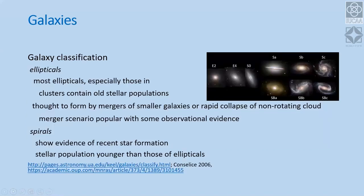To give you an overview of the properties: in astronomy you'll always find the oddball, and there's a gradation of properties. Ellipticals generally contain old stellar populations — they're reddish in color. Why reddish? Because the old stars are the low-mass stars. The bright stars, the blue stars, are massive stars which live relatively shorter lifetimes.